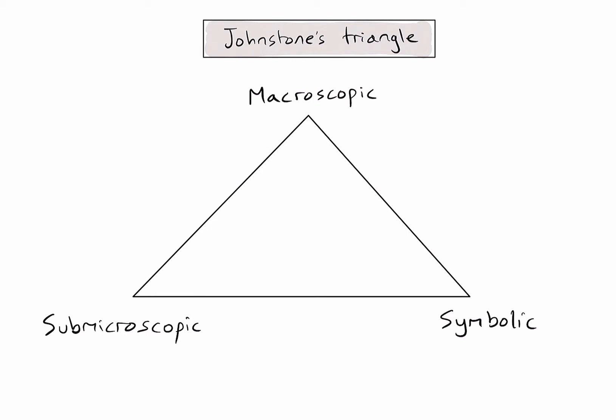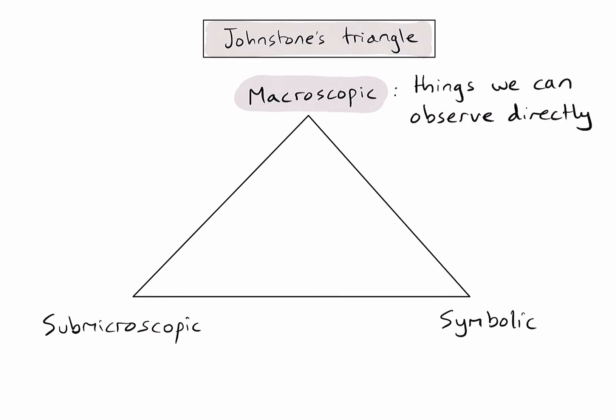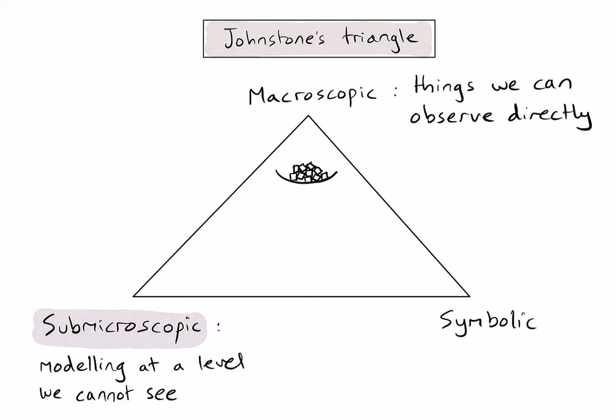The macroscopic level considers things that we can observe. For example, I might be able to observe that salt is made up of small white cubic-shaped crystals. At the submicroscopic level, we consider how we might model this substance at a level that we cannot see directly with our eyes. To explain the regularly shaped crystals of salt, I might model it at an atomic level as a lattice of oppositely charged ions like this.